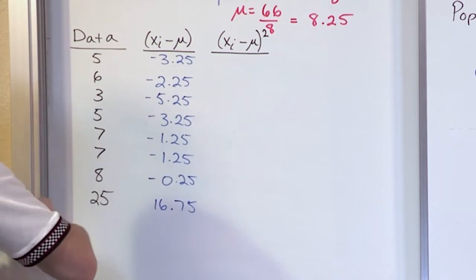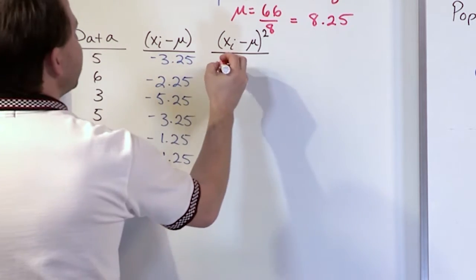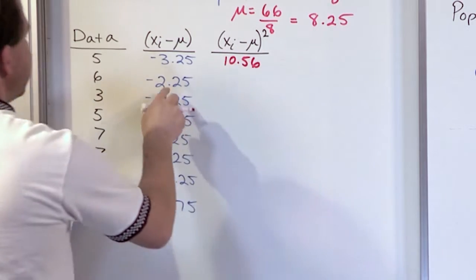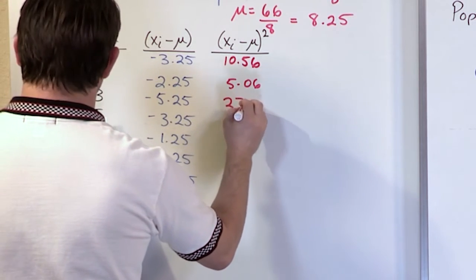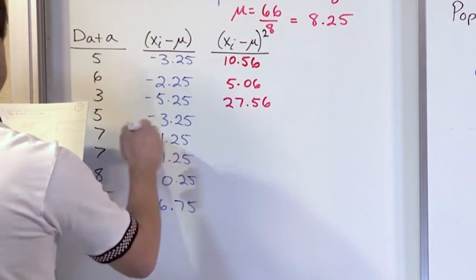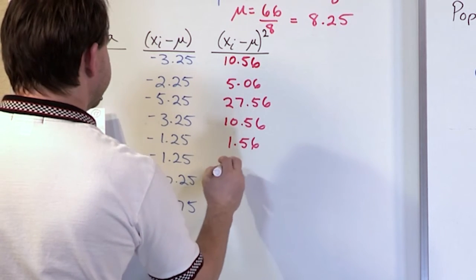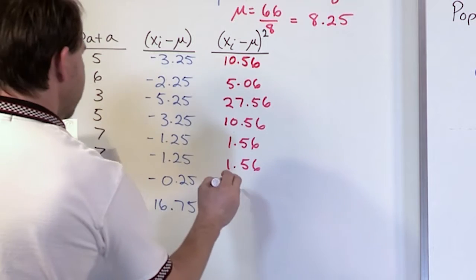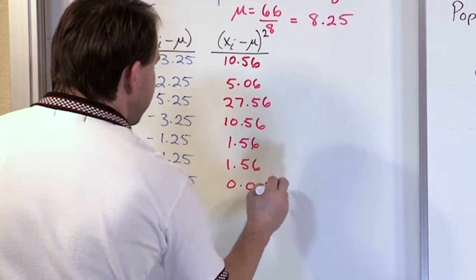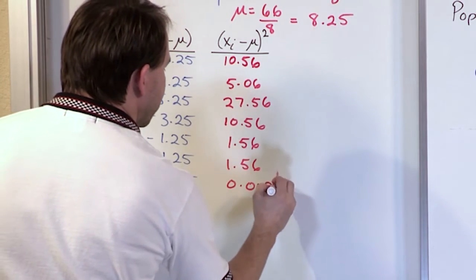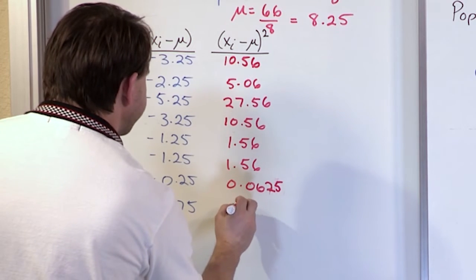Now I create another column and square each of those values. Negative 3.25 squared gives 10.56. Negative 2.25 squared gives 5.06. Negative 5.25 squared gives 27.56. Negative 3.25 squared gives 10.56 again. Negative 1.25 squared gives 1.56, same for the next one: 1.56. Then negative 0.25 squared gives 0.0625. And 16.75 squared gives 280.56. You should always have positive values in this squaring column.